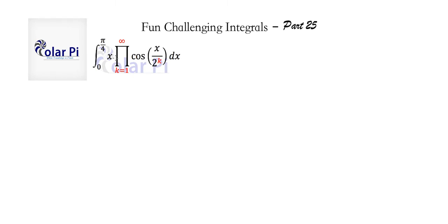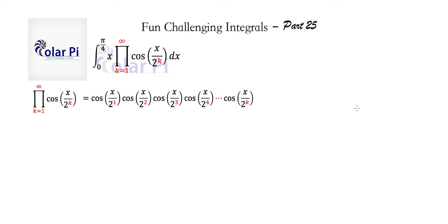The first thing we should do is look at this infinite product that's after the x and before the dx. If we isolate it, the infinite product is this — but not quite right, because this is finite and this is an infinite product. So we need a dot dot dot at the end. Whereas capital sigma adds, capital pi here multiplies. So we read this as the product from k equals 1 to infinity of cosine of x divided by 2 to the k, where k is replaced by 1, then 2, and so on.